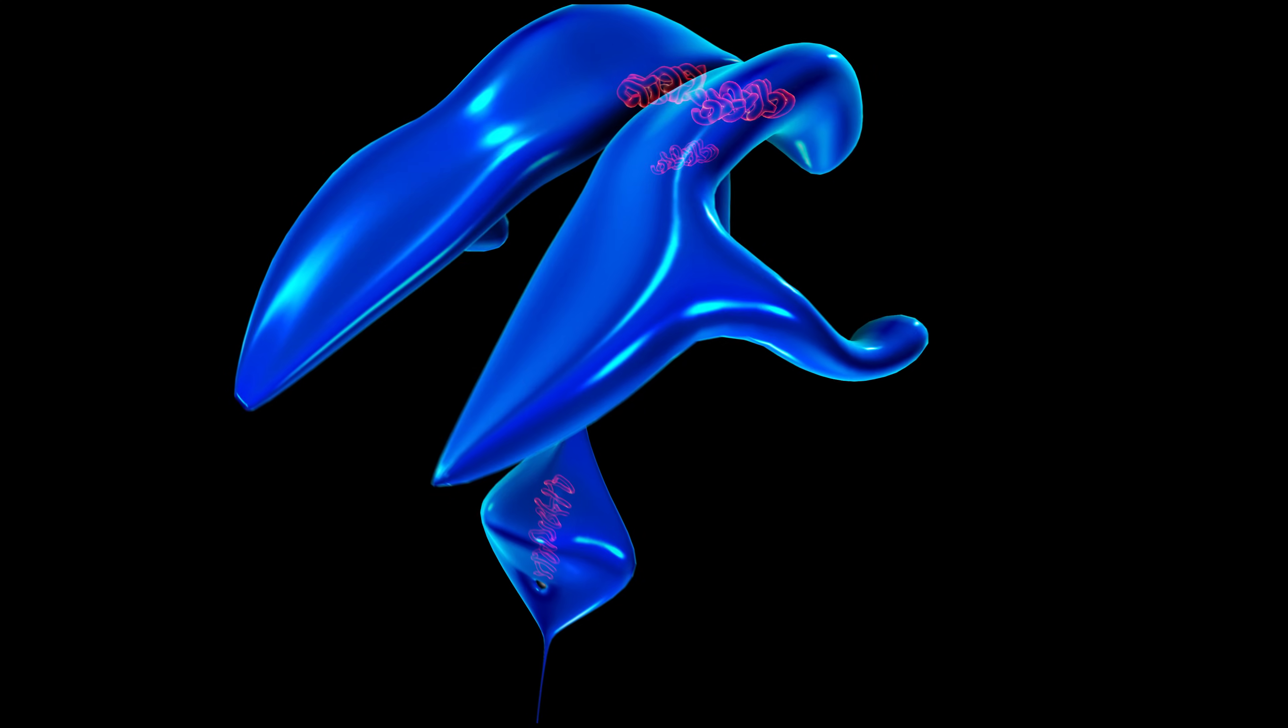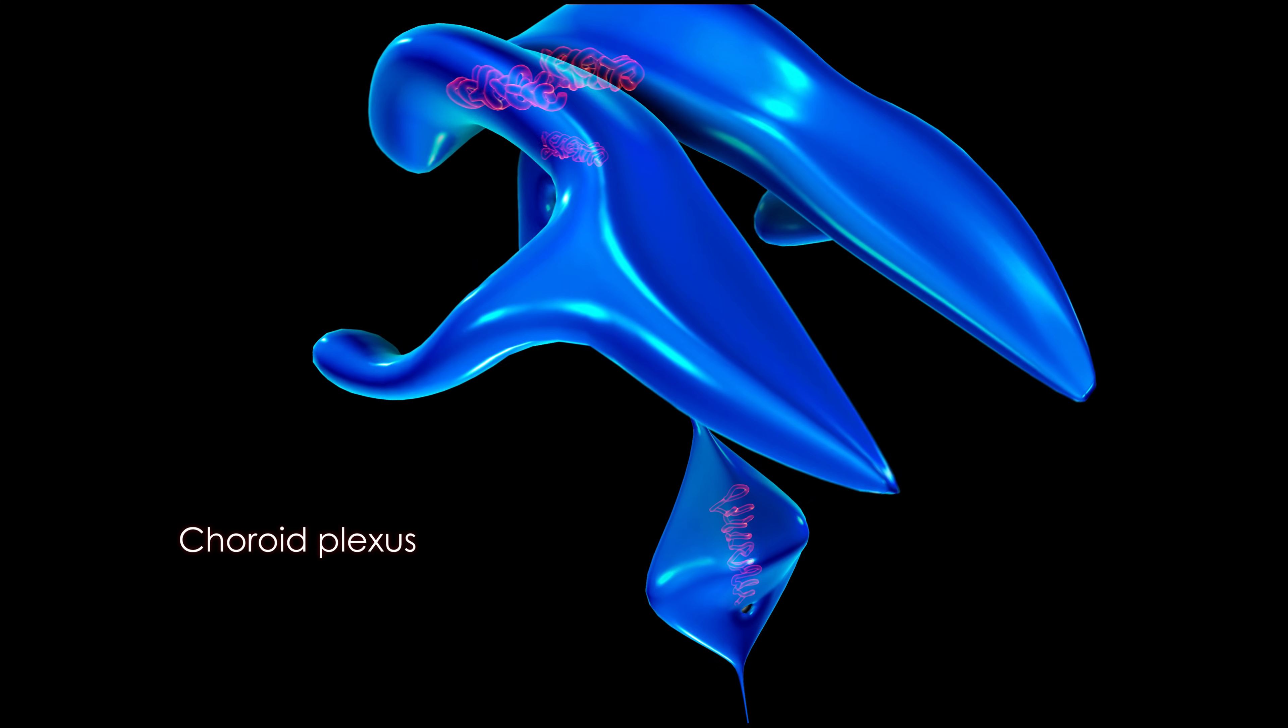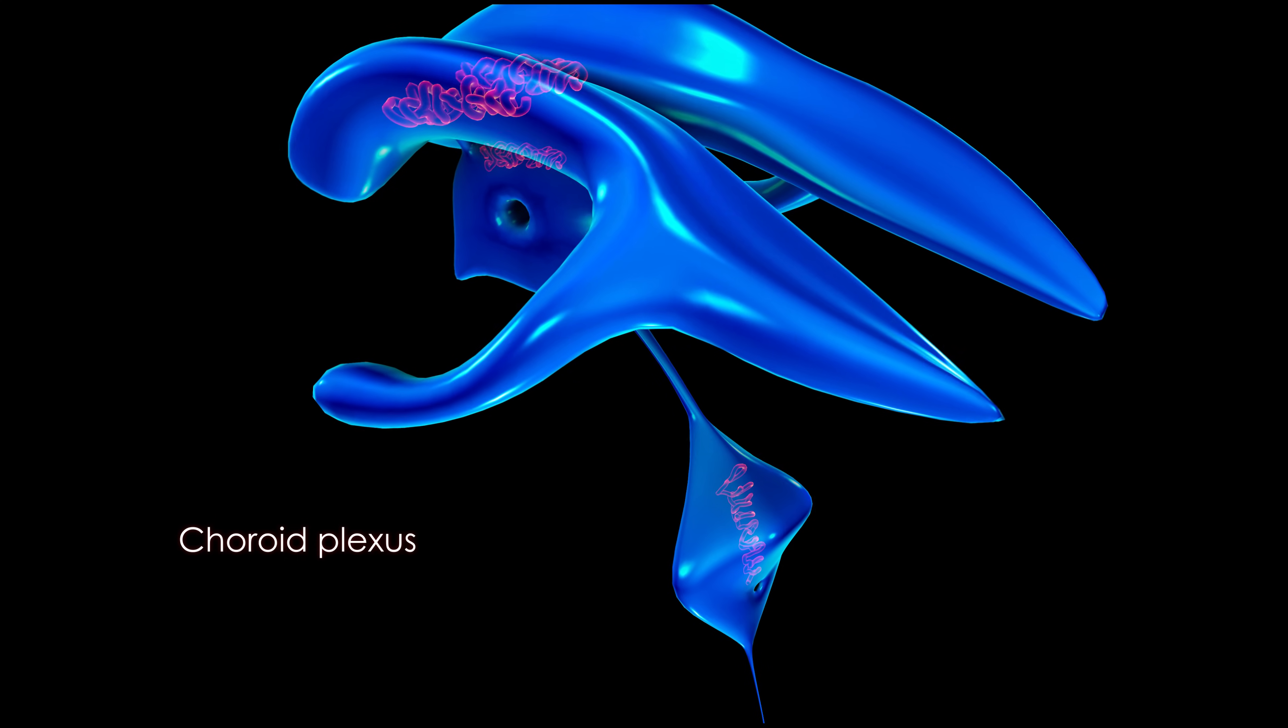The CSF is secreted by the choroid plexus, clusters of capillary blood vessels located in the ventricular system.